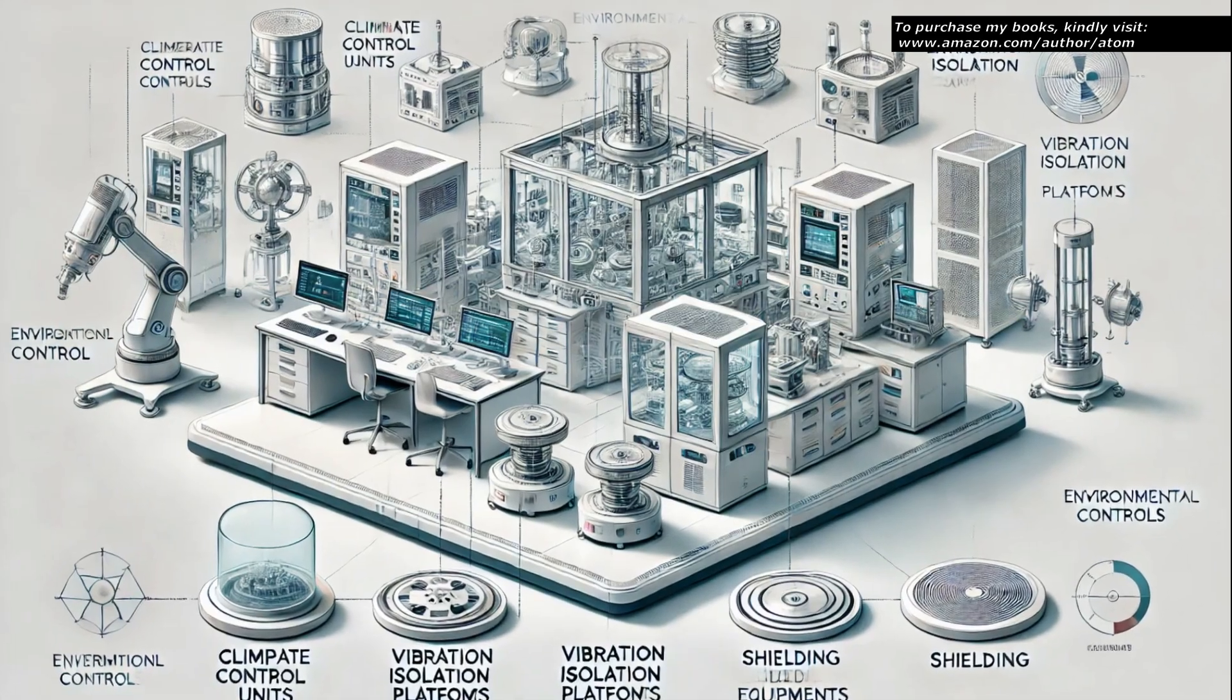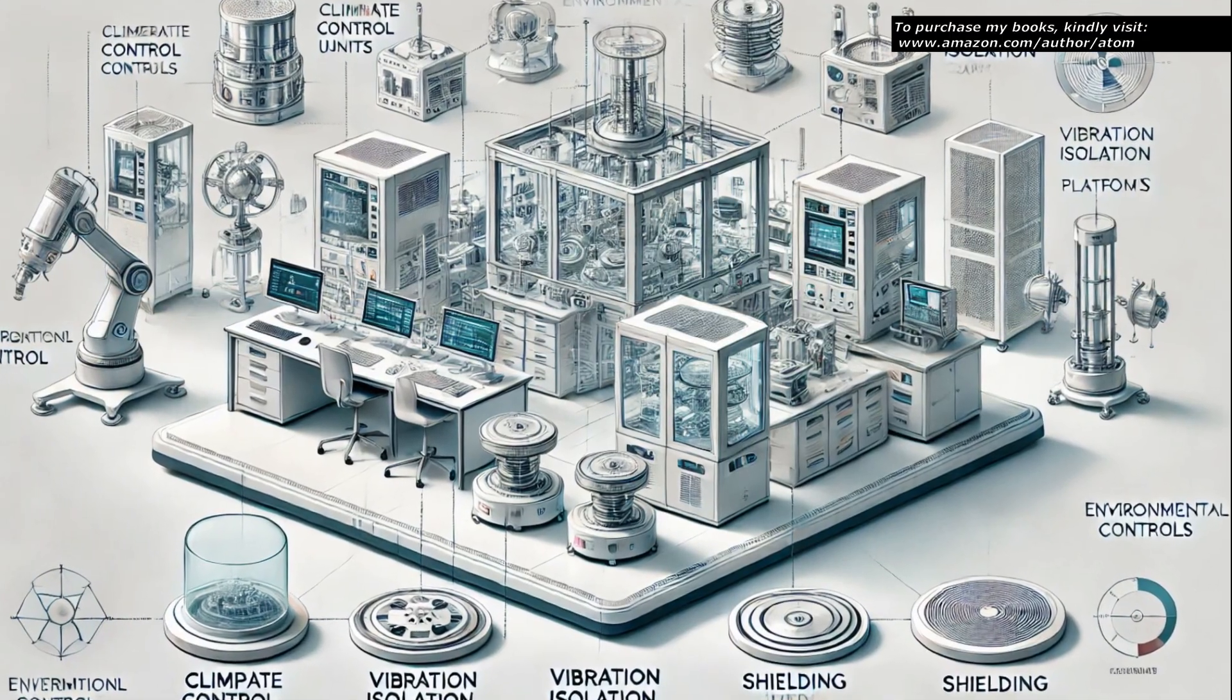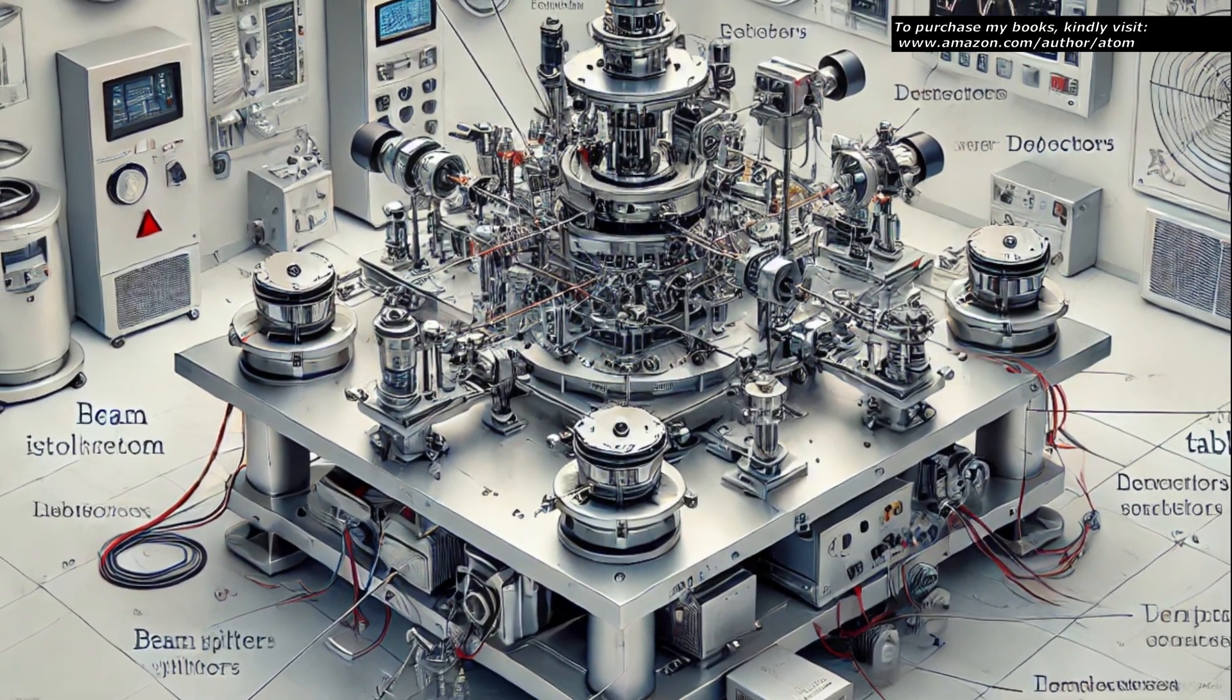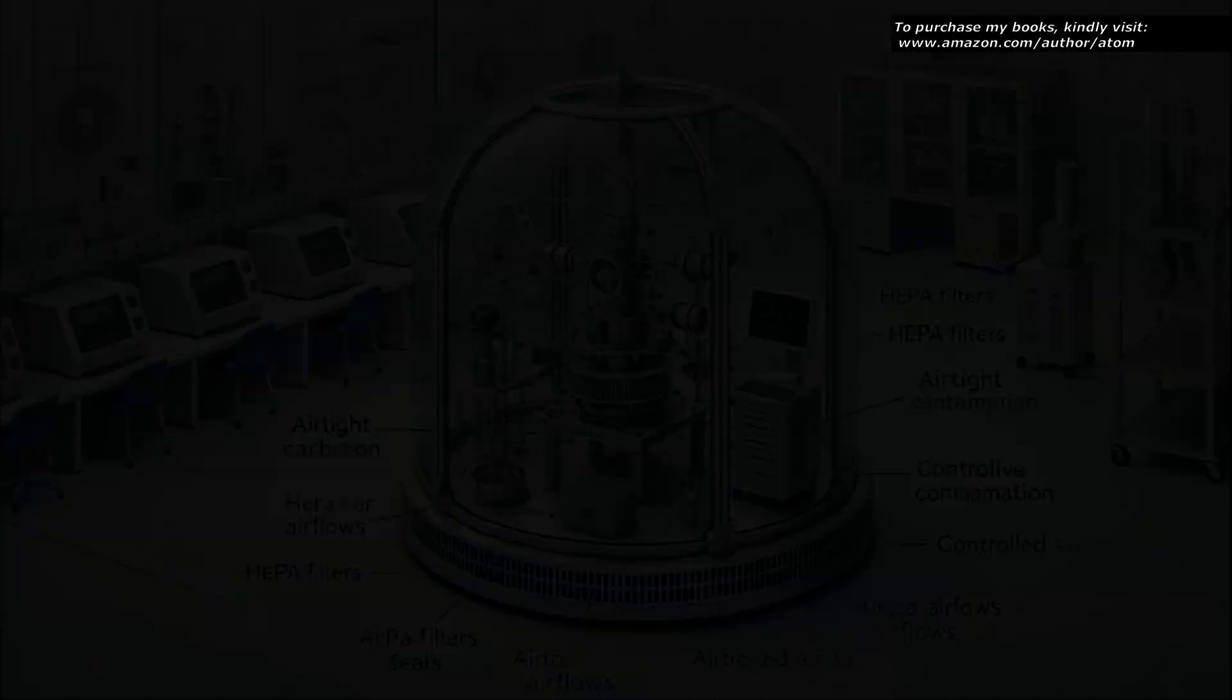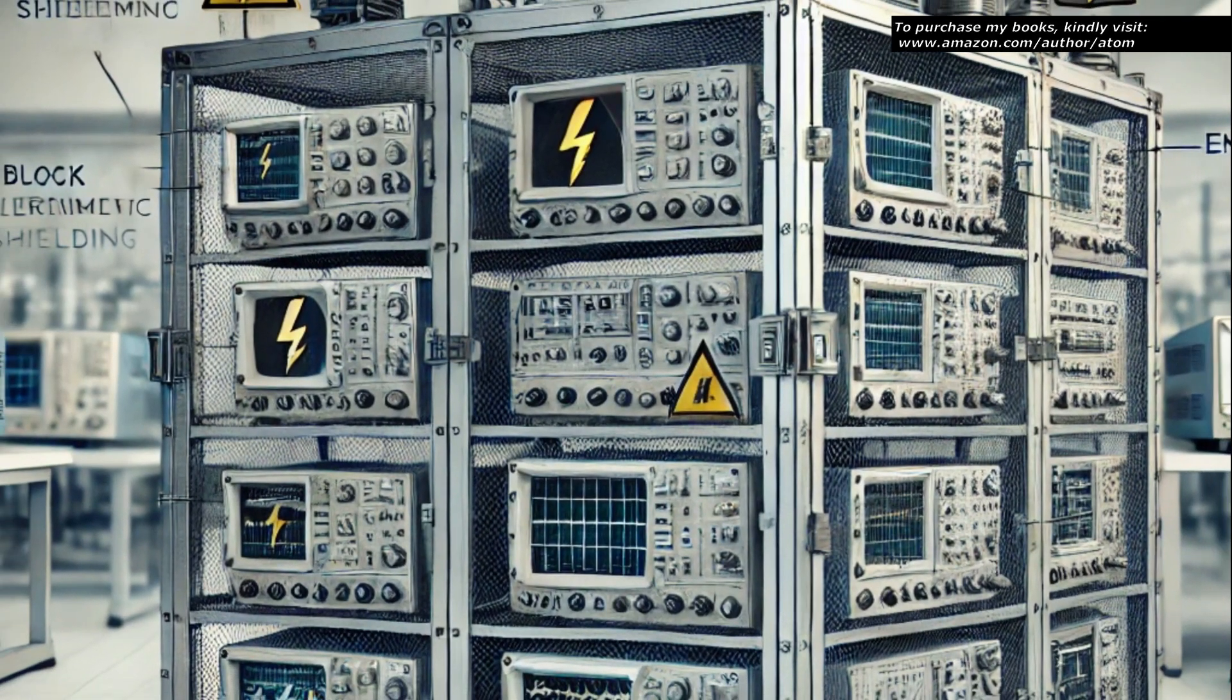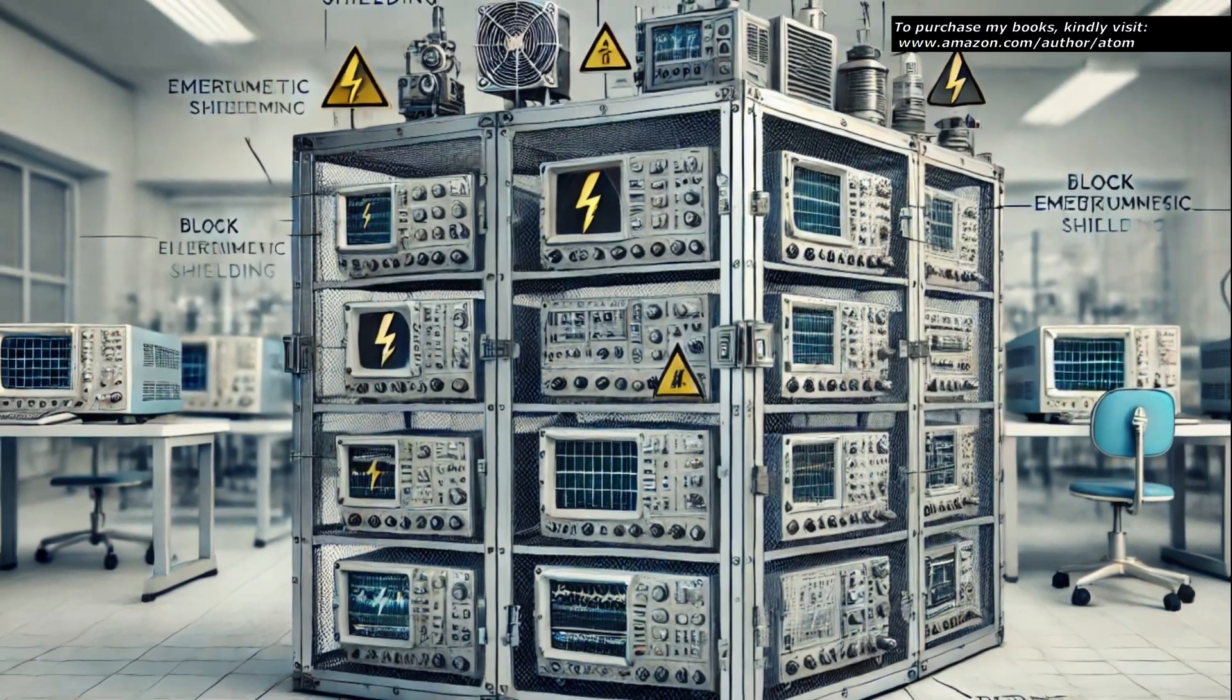To ensure the accuracy and reliability of the experiment, environmental control systems are employed. The interferometer is placed on a vibration isolation table within a temperature-controlled room to minimize external disturbances. The entire setup is enclosed to prevent air currents and dust from affecting the measurements. Sensitive electronic equipment is housed within shielded enclosures to protect against electromagnetic interference.